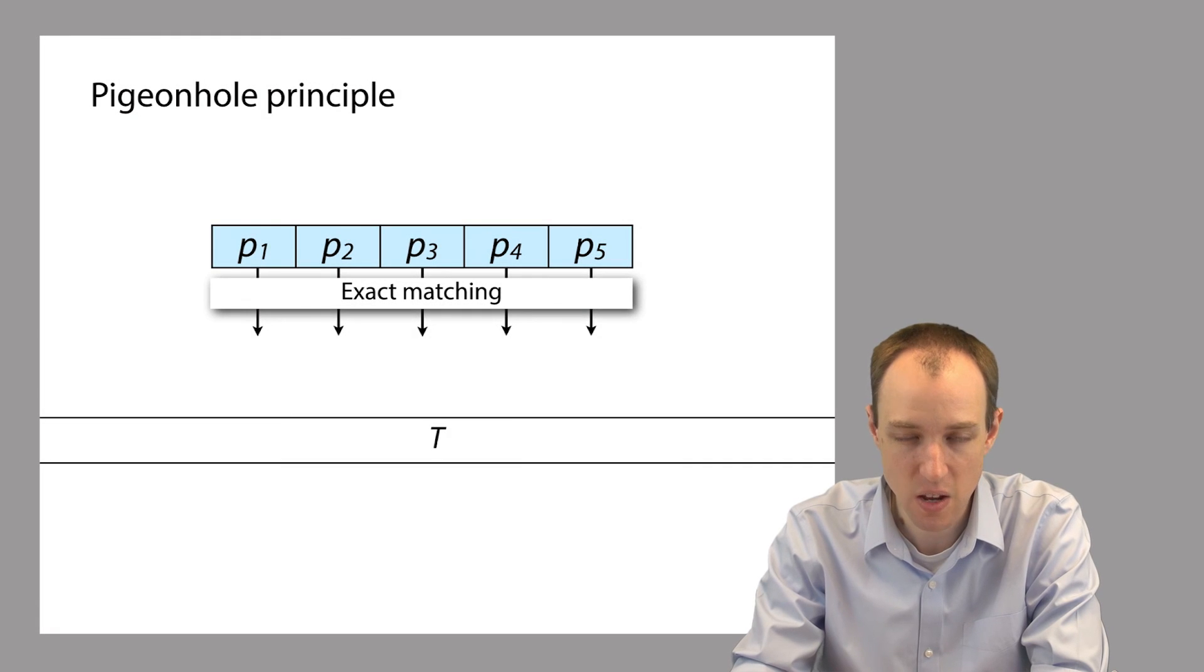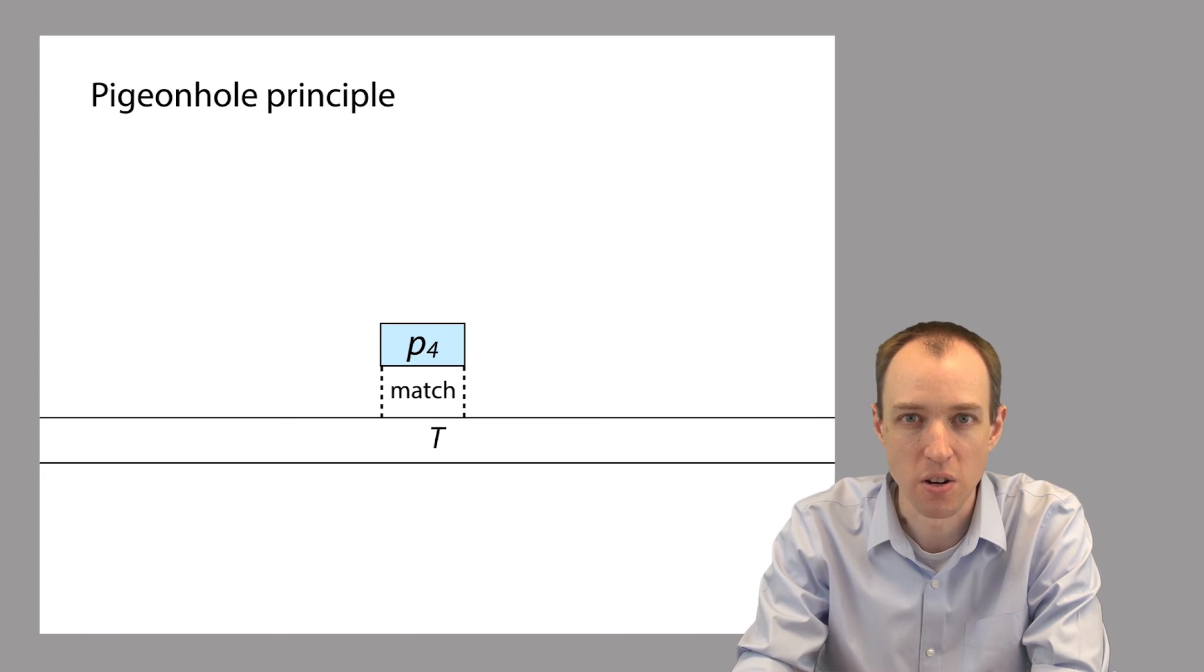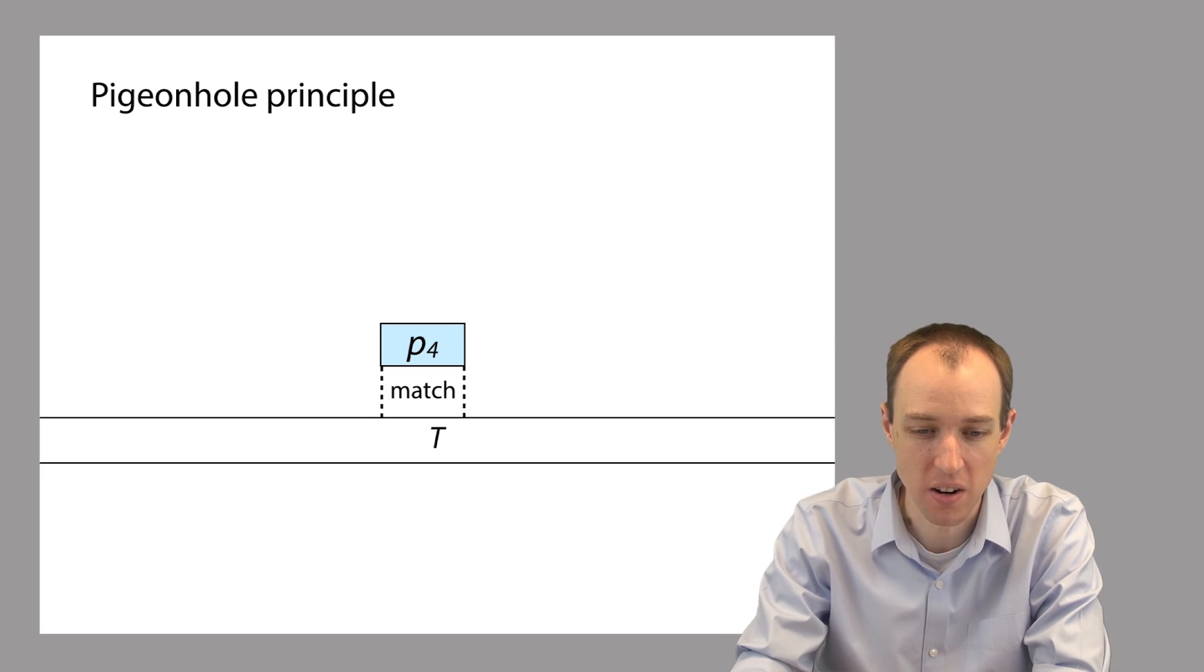So let's say the only match that we find is a match of partition P4 right here. We find partition P4 occurring within T. So that's our hint that there might be an approximate match of P to T in the neighborhood of this partition match here.